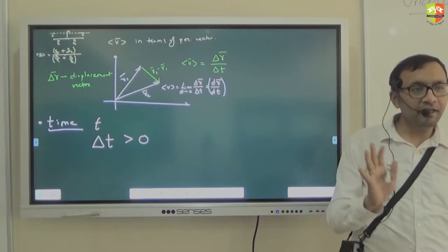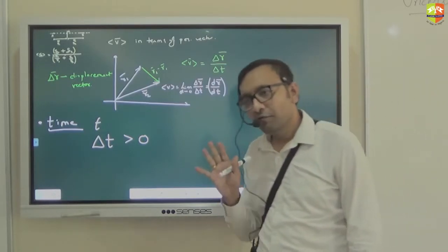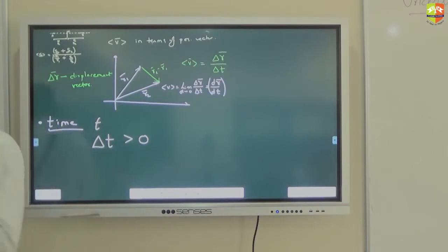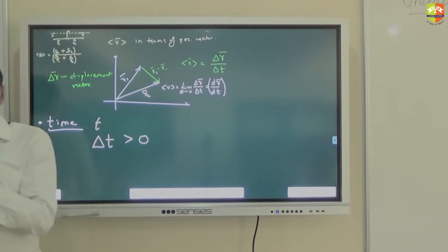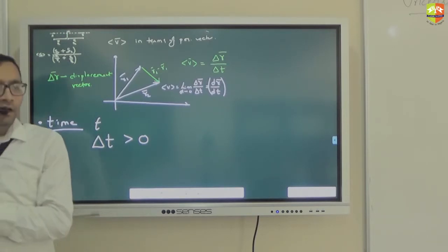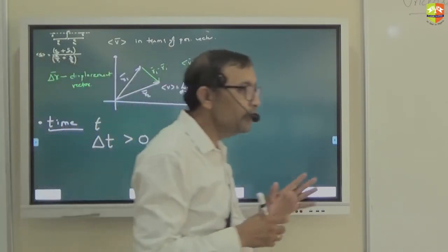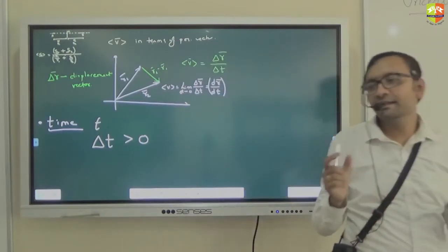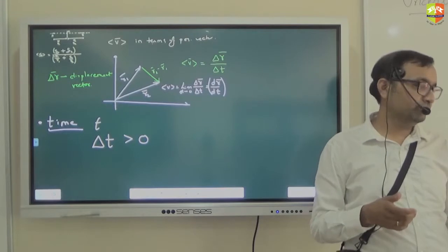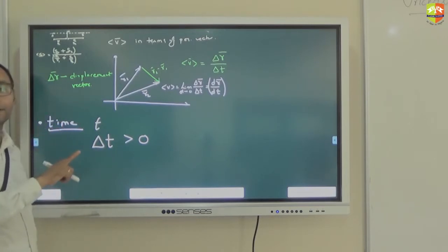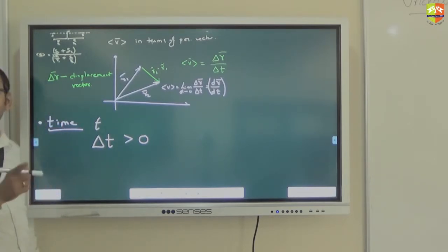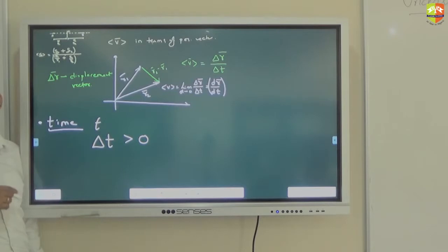In this entire chapter we are keeping time as something which is fixed. If two elephants are running and both stop together, they get the same amount of time. We are assuming that whatever the time is for one elephant is the time for the other as well. Delta t will always be greater than zero — it cannot even be equal to zero. Time can't stop.